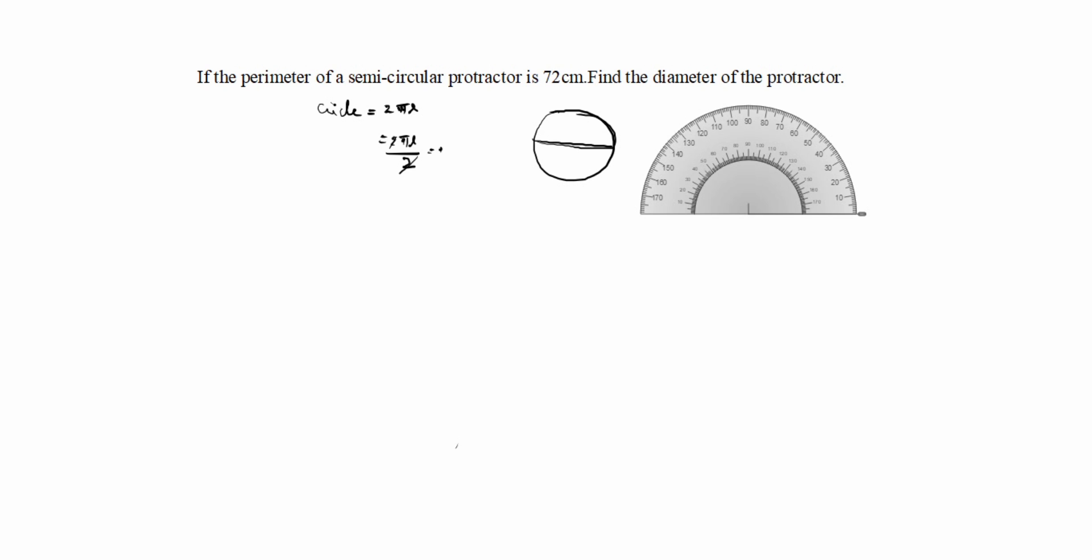2 cancels, equal to πr. So this value is πr. This is r, this is r up to here. So whole together, r plus r is 2r equal to d, diameter.